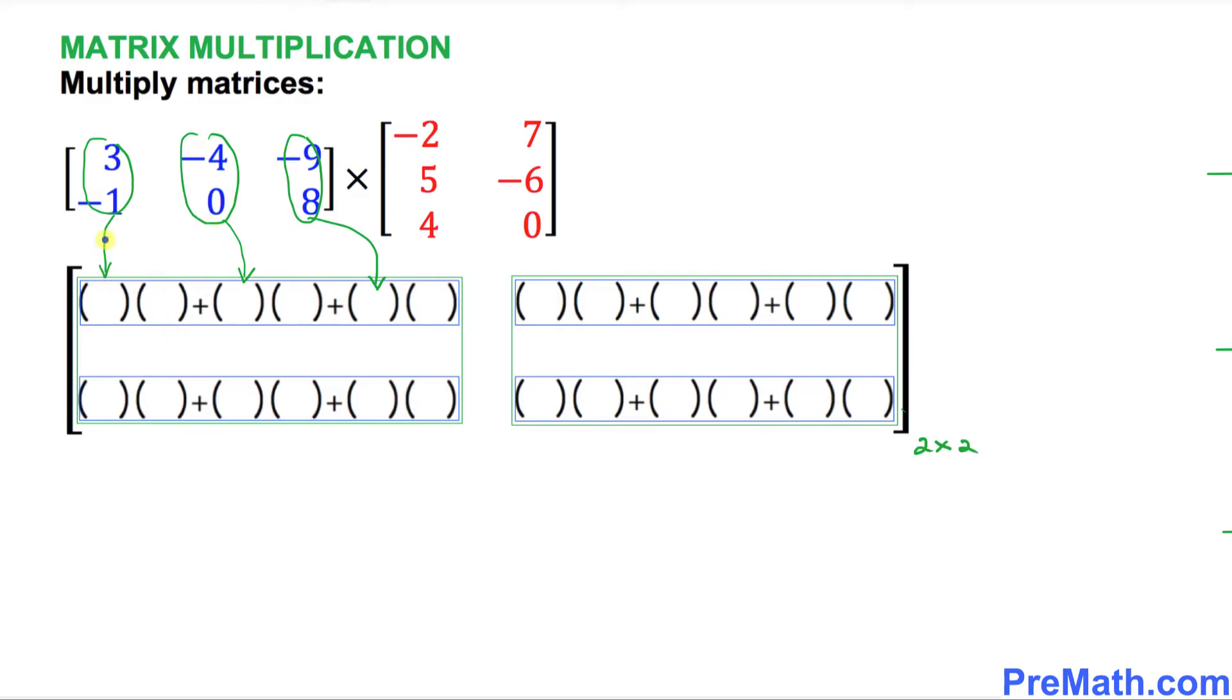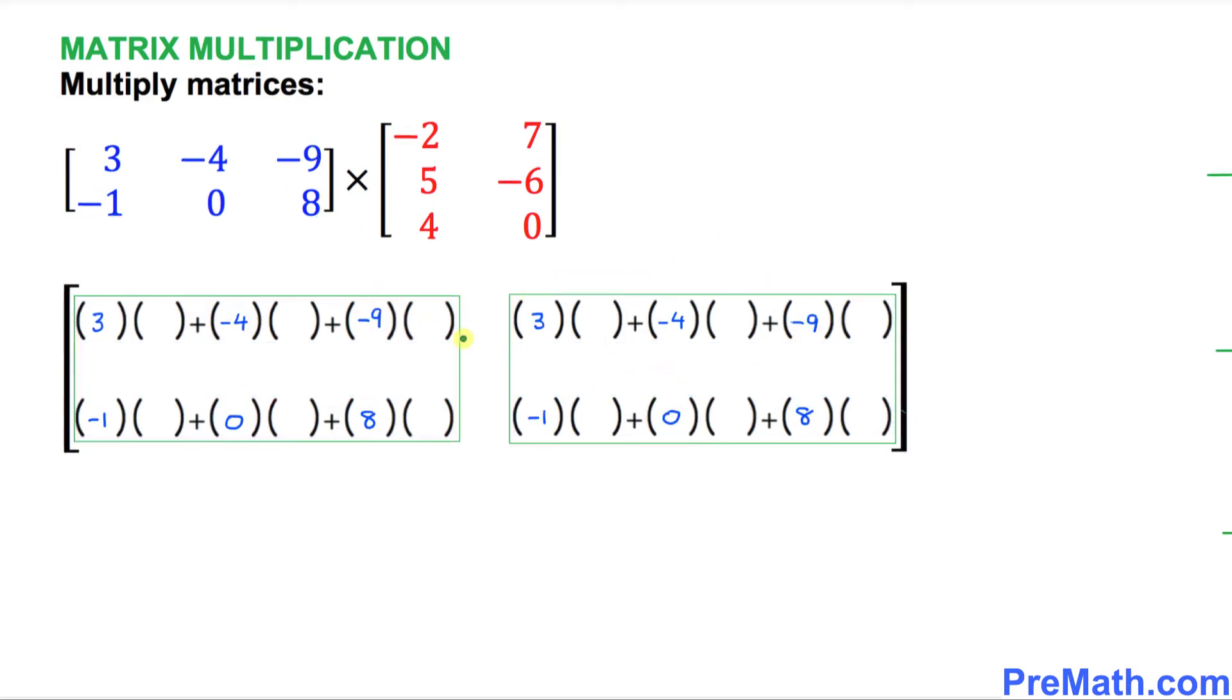Let's start filling out those ones. So that's going to be 3, -1, -4, 0, -9, 8. And likewise, we're going to fill out these blue numbers in the second column as well. And here is the matrix that has all these blue numbers nicely spread out.